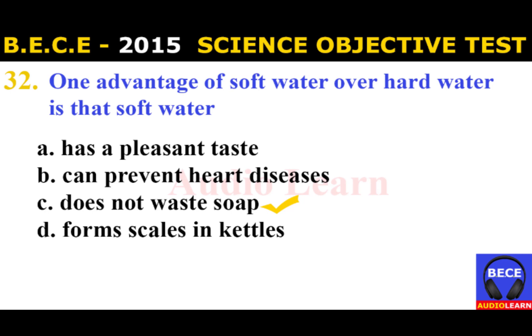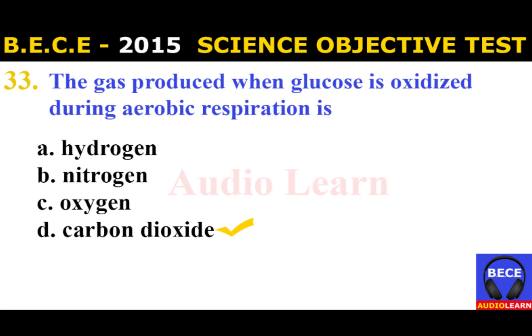Number 32: One advantage of soft water over hard water is that soft water A. Has a pleasant taste, B. Can prevent heart diseases, C. Does not waste soap, D. Forms scales in kettles. The answer is C. Does not waste soap. One advantage of soft water over hard water is that soft water does not waste soap.